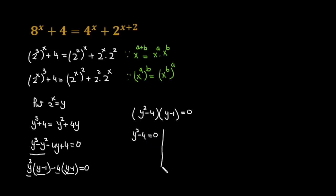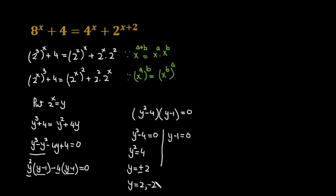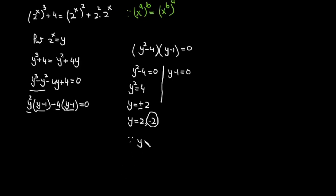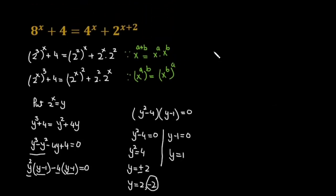There are two cases: y squared minus 4 equals 0, or y minus 1 equals 0. When y squared minus 4 equals 0, we get y squared equals 4, so y equals plus or minus 2. We leave the case y equals minus 2 because y must be positive — since y equals 2 raised to the power x, it is always greater than 0. So we only consider y equals 2.